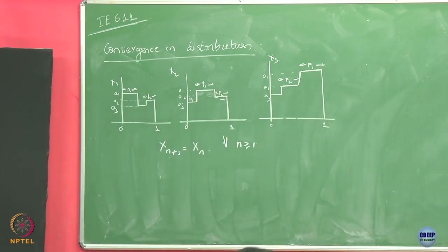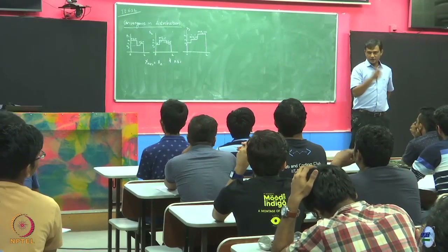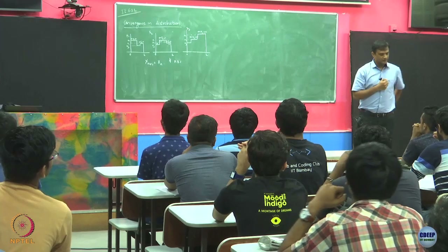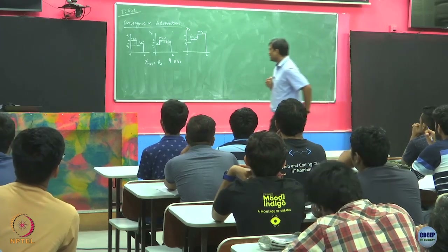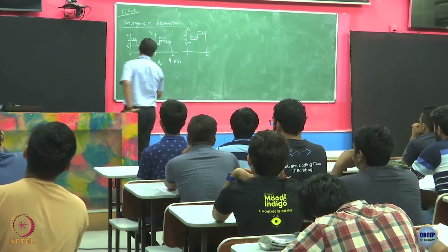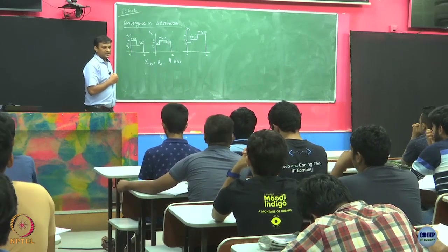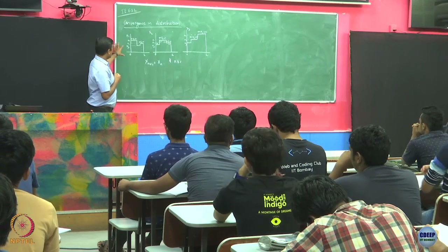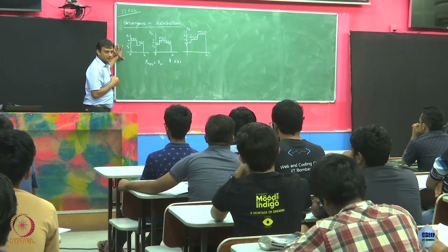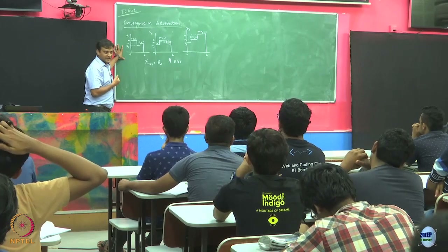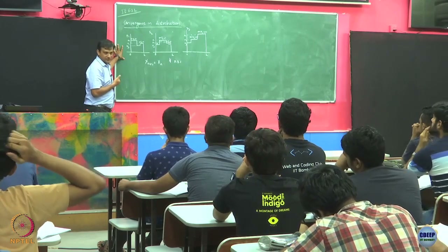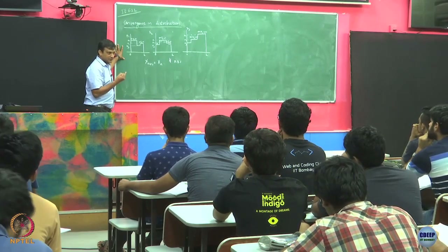If you have a sequence of random variables like this, do you expect it to converge in almost sure sense or in probability? No, because this is periodic and it is fluctuating so much. But if you look at the distributions, what is the distribution of x1? x1 is a discrete-valued random variable, right — it takes only three values a1, a2, a3.